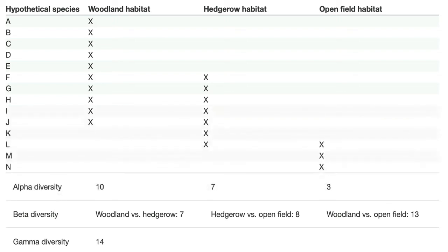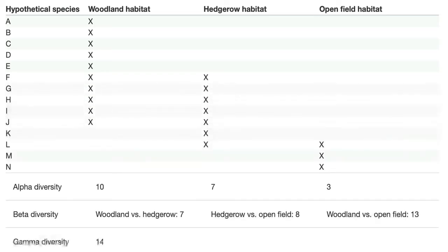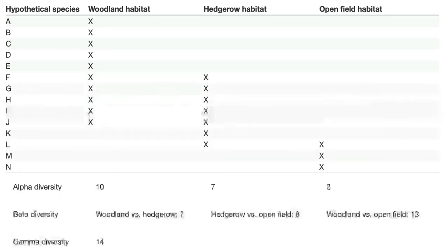Now for beta diversity, when we compare woodland and hedgerow we can see some organisms are found in both regions. We remove those five common ones and count only the unique ones. Species A through E are only found in woodland, and K and L are only found in hedgerow — that gives us about 7 unique species. So the beta diversity of woodland and hedgerow is 7.